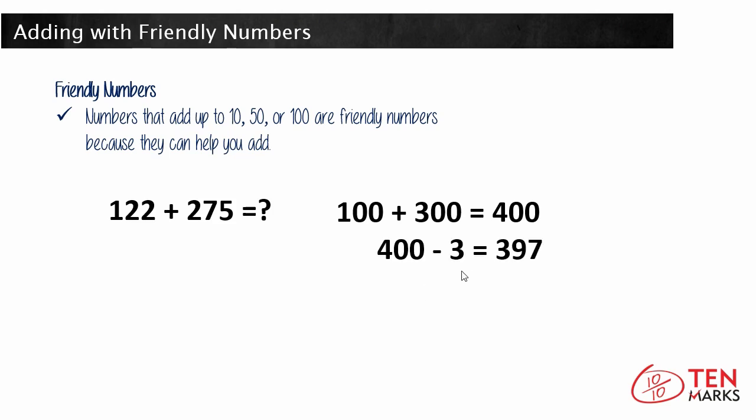400 minus 3 equals 397. So the sum of 122 and 275 is 397 as you see here.